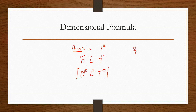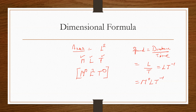Similarly for speed: speed is distance divided by time. Distance means L and time means T, so we can write this as L T raised to the power minus 1. There is no mass, so the dimensional formula of speed is M⁰ L¹ T⁻¹.